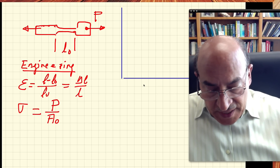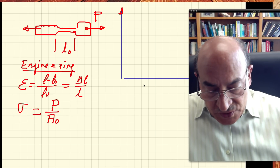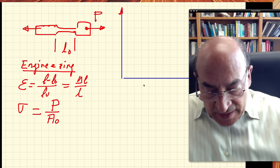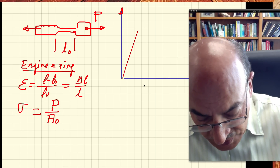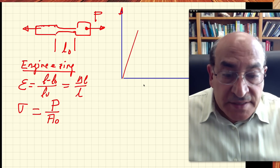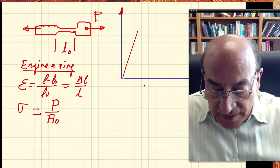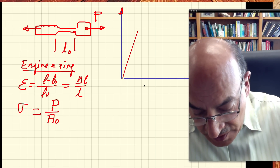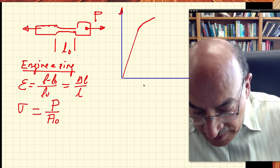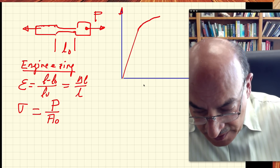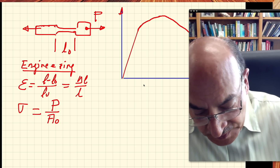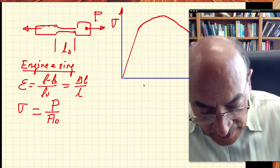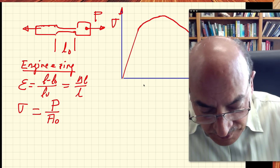If we plot these two quantities, we see that one part of the graph is a straight line — the elastic portion. Then we have deviations from that straight line as load increases, stress continues to increase, and eventually the material extends, becomes weaker, and fails. We define sigma on the vertical axis and epsilon on the horizontal axis.